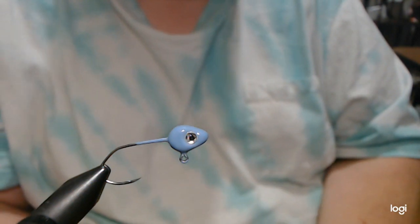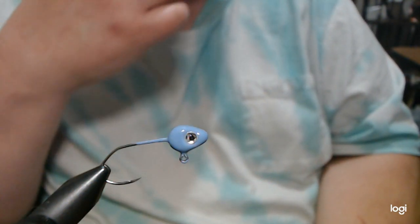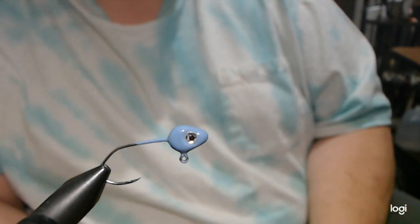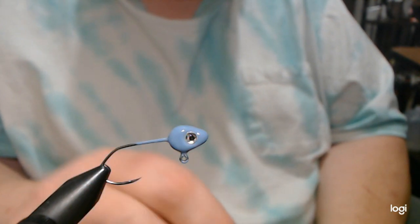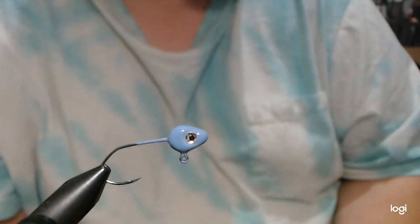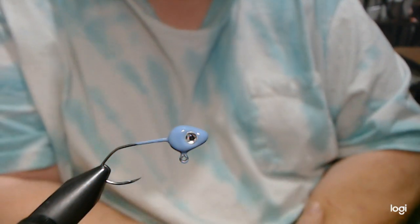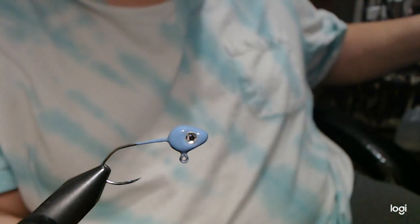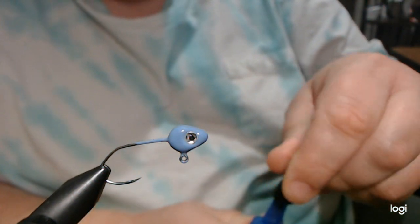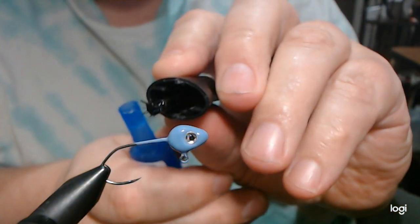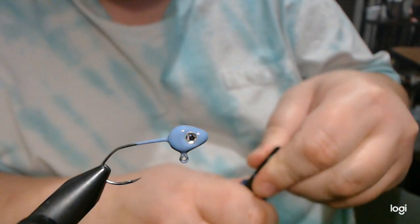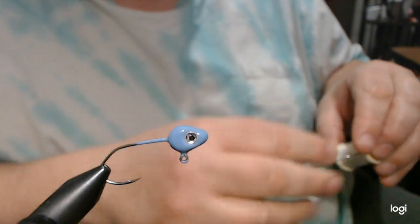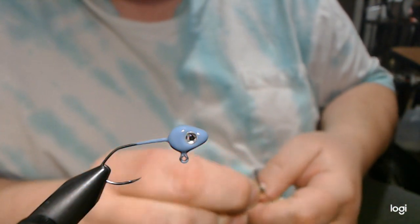In the vise we have a 1/16th ounce minnow head jig. It's got a size 4 Victory 11149 sickle style hook and the color is powder blue. The pattern is called blue minnow. We're going to start here with a little bit of super glue brushed on along the shank, and we're going to use white 140 denier flat wax nylon.